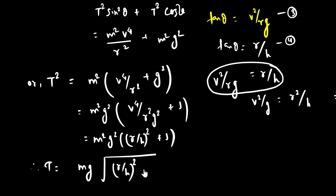So we have the tension in the string. I can also apply these results to find the time period of the conical pendulum and the original circular motion. This completes the theoretical portion. I am going to do the numerical problem in another video. Have a good time and keep loving physics. Thank you.